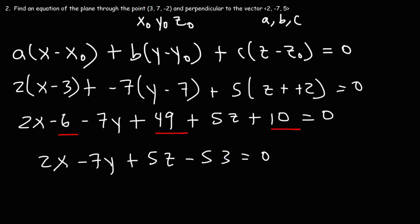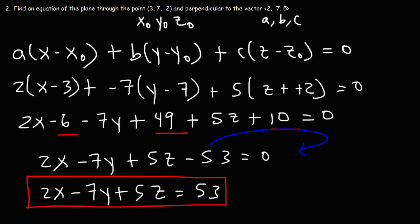Now, our last step is to move the negative 53 to the other side. So the final answer is 2X minus 7Y plus 5Z, which equals 53. So that is the equation of the plane, which is in this form, AX plus BY plus CZ, which equals D. So that's the linear equation form of the plane.